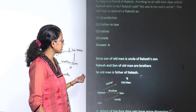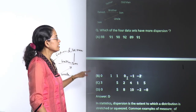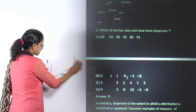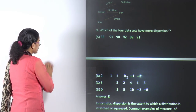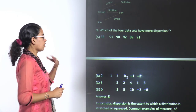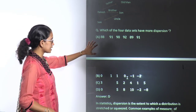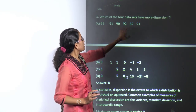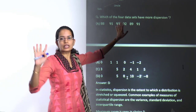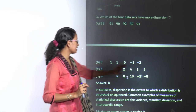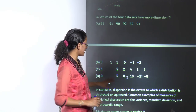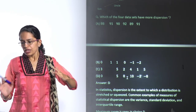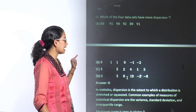The next question is on dispersion. In dispersion we find range, quartile, interquartile range, or variance. From the given sets — choices A, B, C, D — the lowest value in one set is 88 and highest is 92, a difference of only 4. Another set ranges from +1 to −2. Another from 1 to 5. But set D goes from 0 to 10, the highest range seen. Therefore D is the correct option.